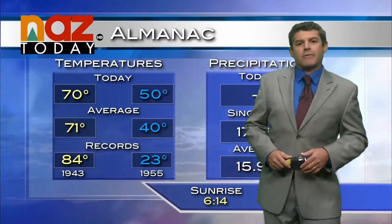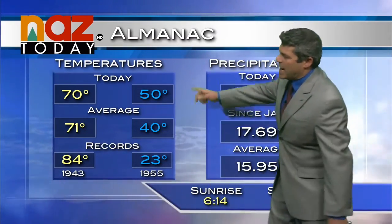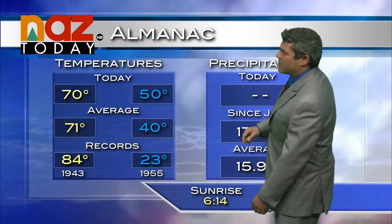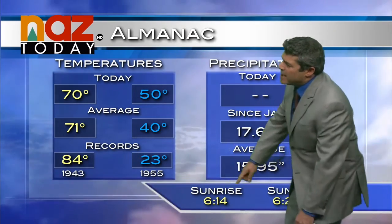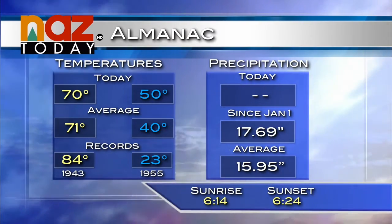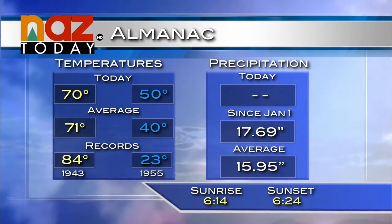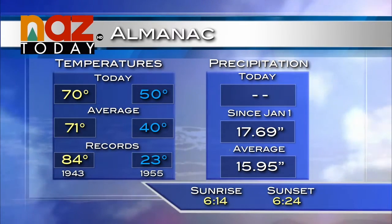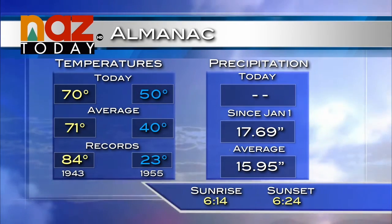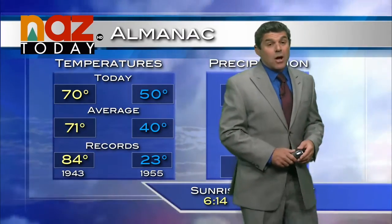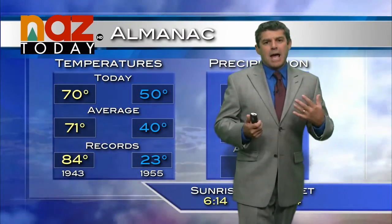70 degrees is our high temperature today for the last day of summer — very on average for this time of year. A warm night last night with some cloud cover and moisture in place. Notice the sunrise and sunset here as we get towards the first day of fall — not exactly equal days and equal nights, but just about as close as they get.